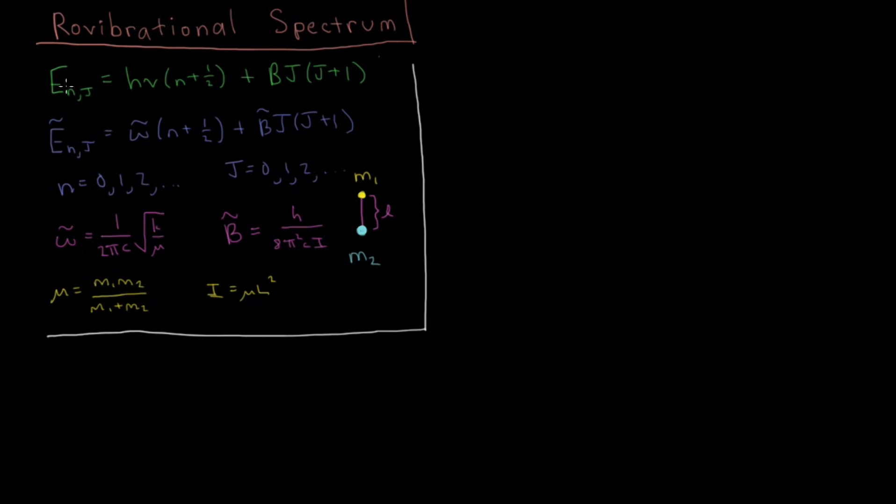In the previous video we showed that the energy levels for a rotating and vibrating molecule follow this equation, just a sum of the harmonic oscillator for vibrations and the rigid rotator for rotations. Moving that into wave numbers, or from units of frequency into units of inverse distance, or wave numbers, that goes to the following equation here.